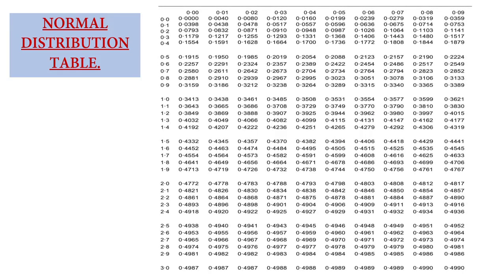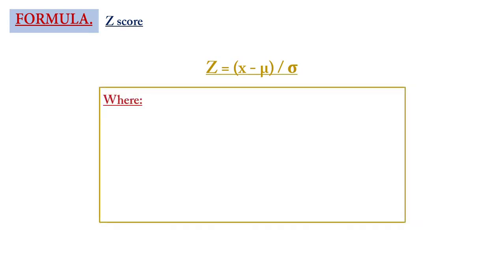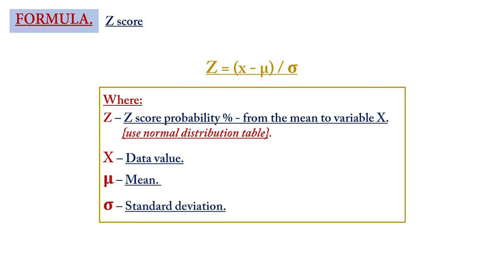Let's quickly take a look at the normal distribution table — this is how it looks. The z-scores are on the left, which you use to find the values across. The formula for z-score is: z = (x − μ) / σ, where z is the z-score, x is the data value, μ is the mean, and σ (the denominator) is the standard deviation.